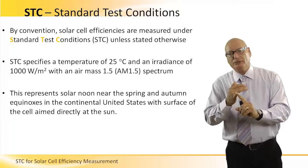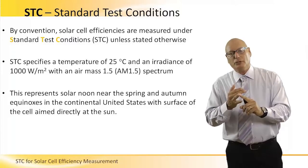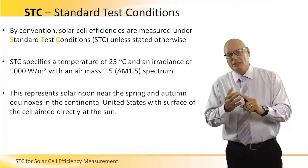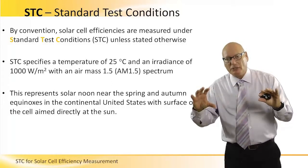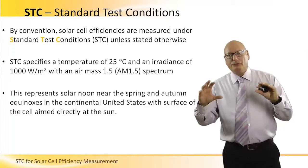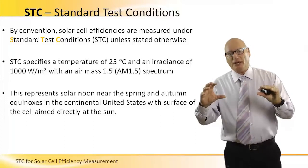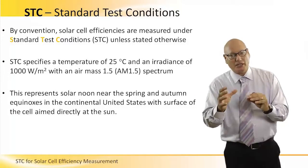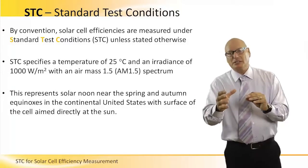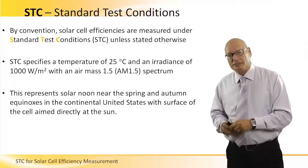It's based on 25 degrees C, 1000 watts per square meter, air mass 1.5. That's the basic parameter of testing and verifying whether a cell meets the standards — good or bad cells. These are the standards.